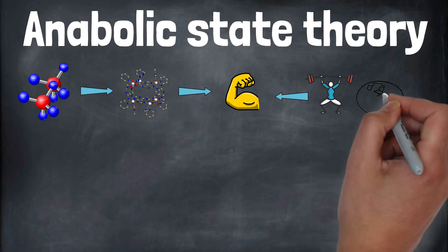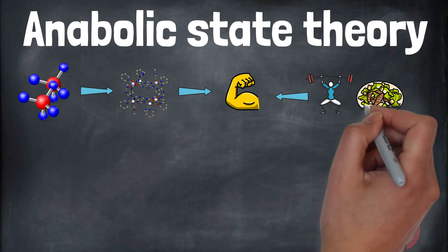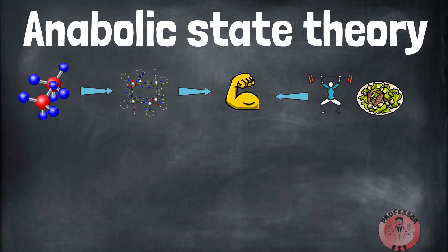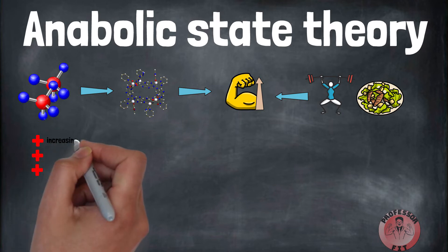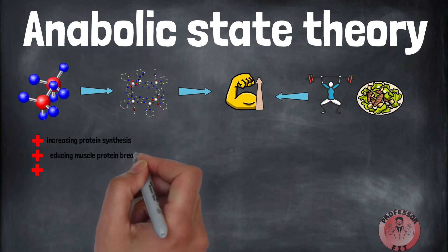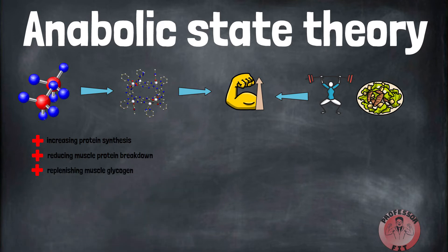This involves a range of cellular processes that facilitate muscle repair and growth. These processes are fueled by protein and carbs. According to the anabolic state theory, this anabolic response is a limited time frame of only 30 minutes. It also claims that immediately eating protein and carbs is critical for increasing protein synthesis, reducing muscle protein breakdown, and replenishing muscle glycogen.